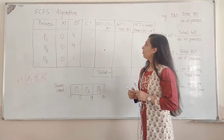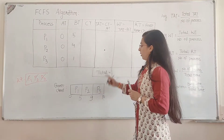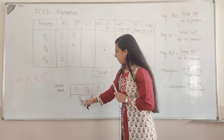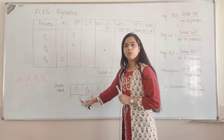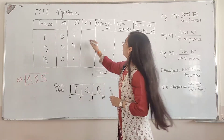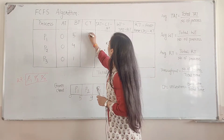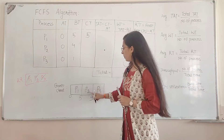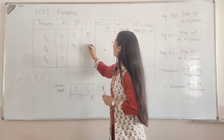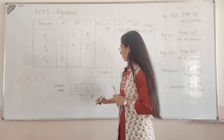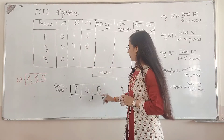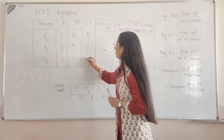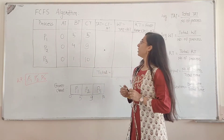This is the Gantt chart. Now, the completion times are: process P1 completes at 5 units of time, process P2 completes at 9 units of time, and P3 completes at 10 units of time.